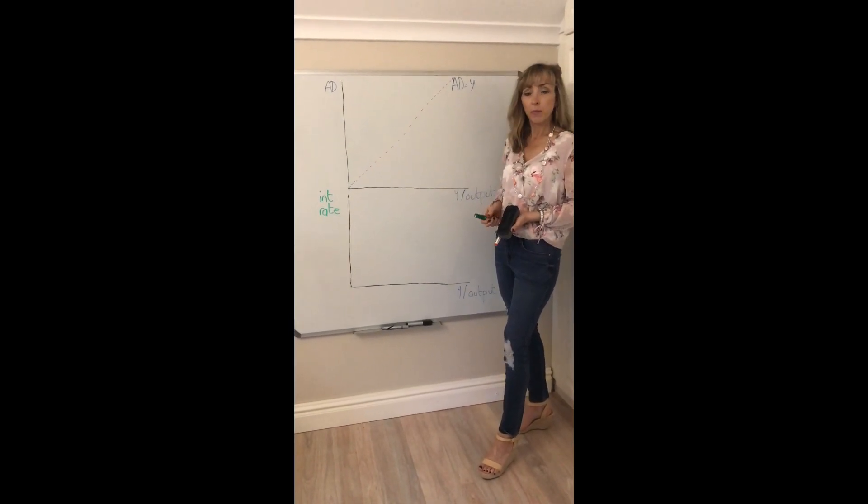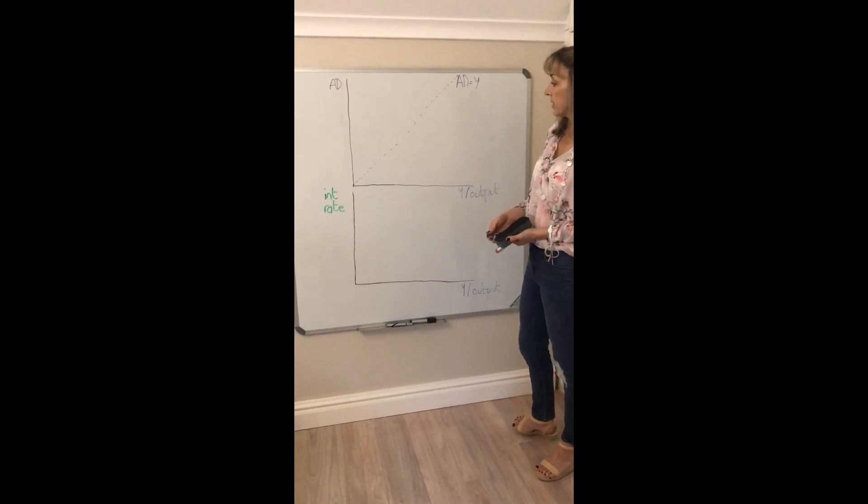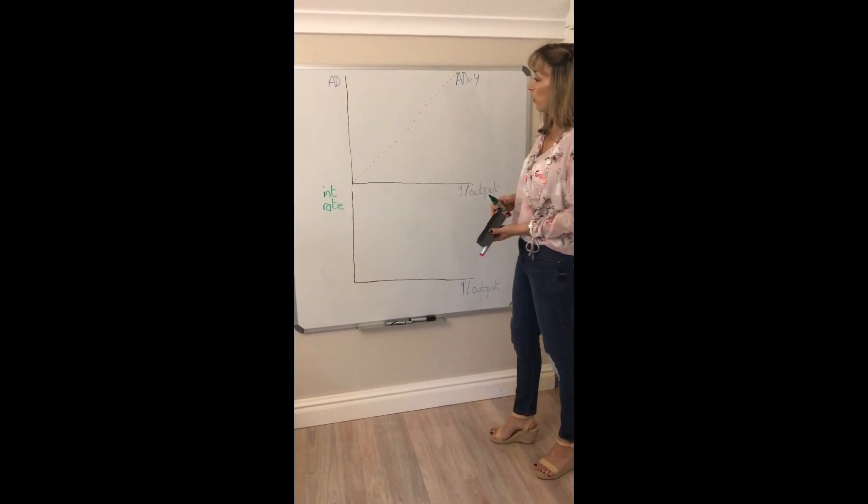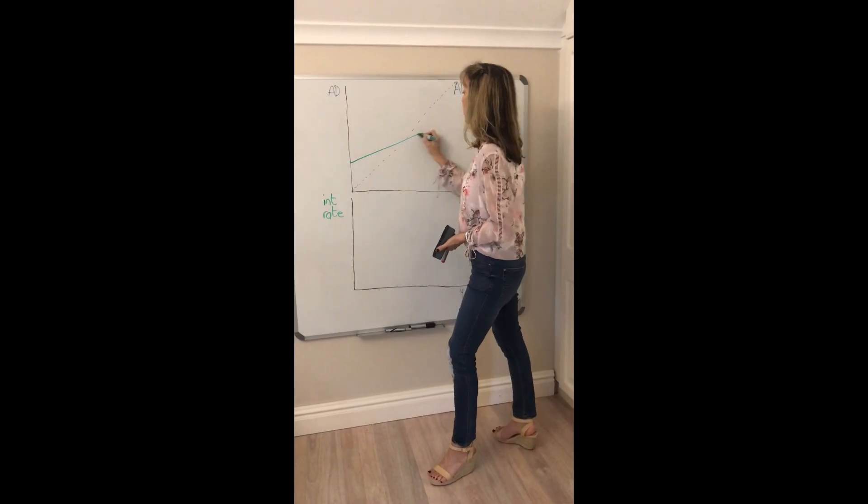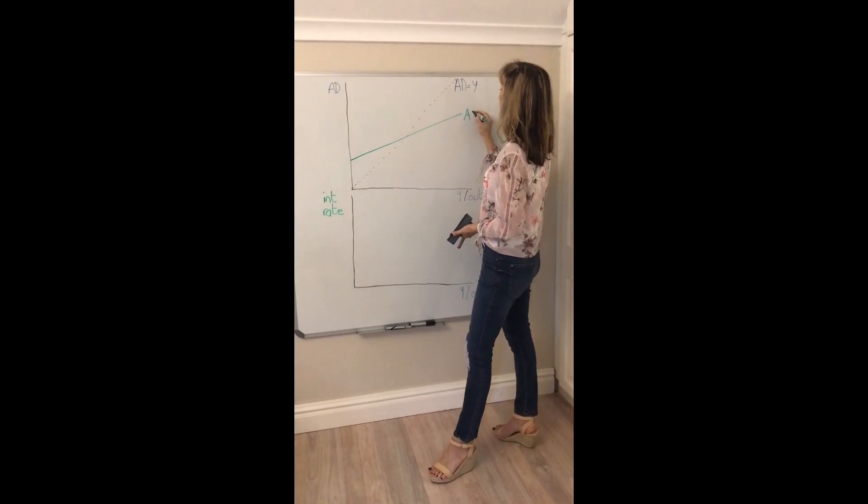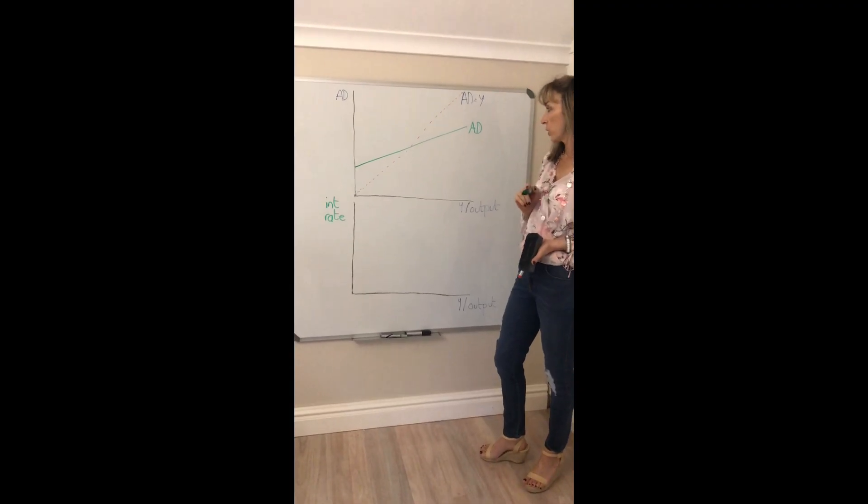We can use that information to derive an IS curve and we'll start off by looking at what happens to aggregate demand when the interest rate changes and then we can define what an IS curve is.